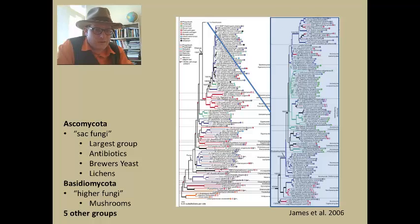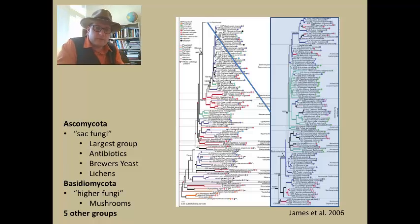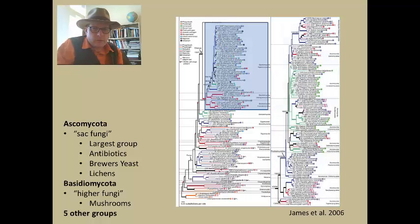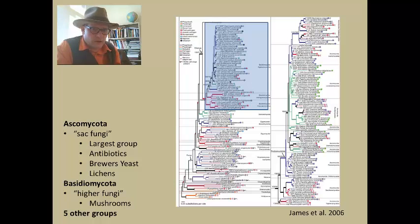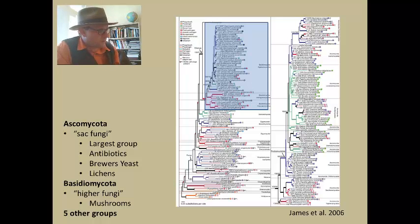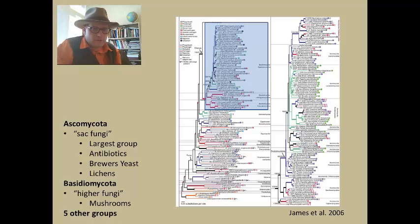Ascomycetes include penicillin, from which we get our antibiotics, brewer's yeast, yeast used to make cheeses, and the lichen groups. They often have a sac-like feature where spores are developed, which is why they're referred to as the sac fungi. The other group, shaded in blue, is the Basidiomycota — often referred to as the higher fungi. They include many mushroom groups, some of which are parasitic on plants and cause plant diseases, while others form the familiar mushrooms that grow in gardens and forests.